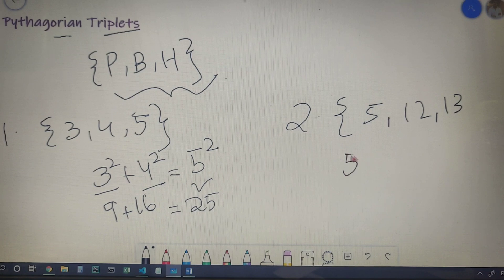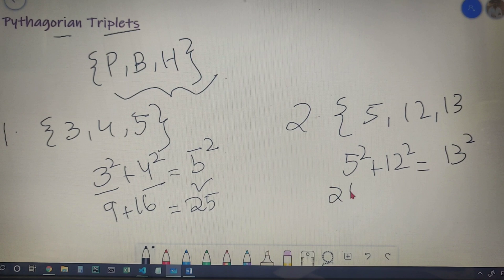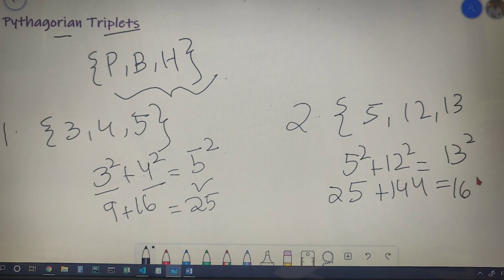So you can check this also. 5 square plus 12 square is equal to 13 square. So 25 plus 144 is indeed 169.